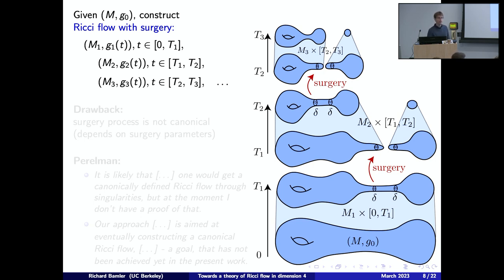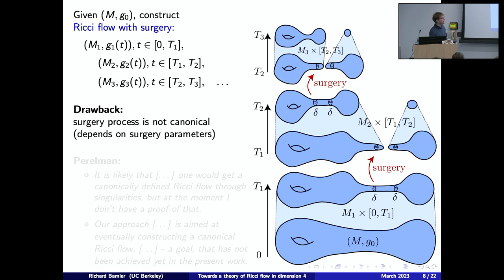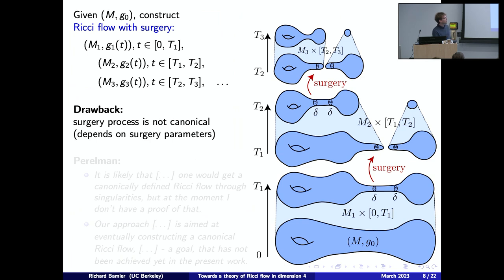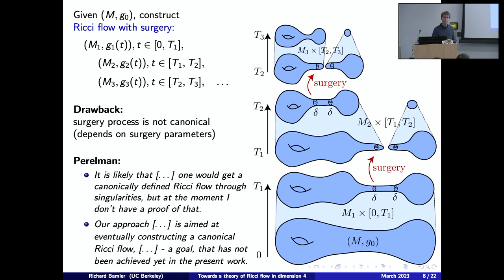However, the flow has a drawback: the surgery process is not canonical. It depends on many parameters, such as the size δ of the cross-sectional two-spheres, and the future evolution depends on these choices. There is no canonical number that is both small and positive. Even Perelman recognized this in both of his groundbreaking papers, writing roughly that there should be a more canonical Ricci flow that flows through singularities on its own.